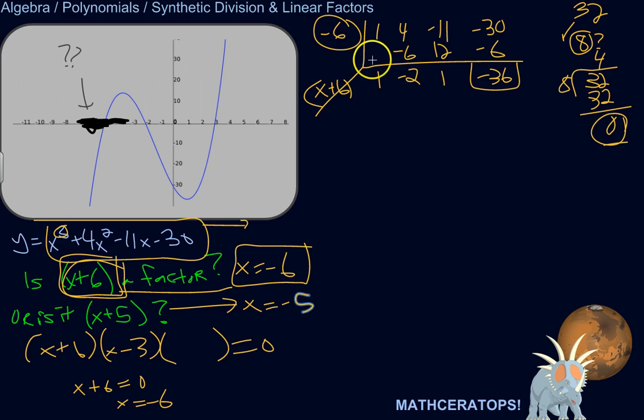So let's try to divide this thing by the factor x plus 5. So we'll use the number negative 5. We've got the same coefficients. Dividing the same polynomial.